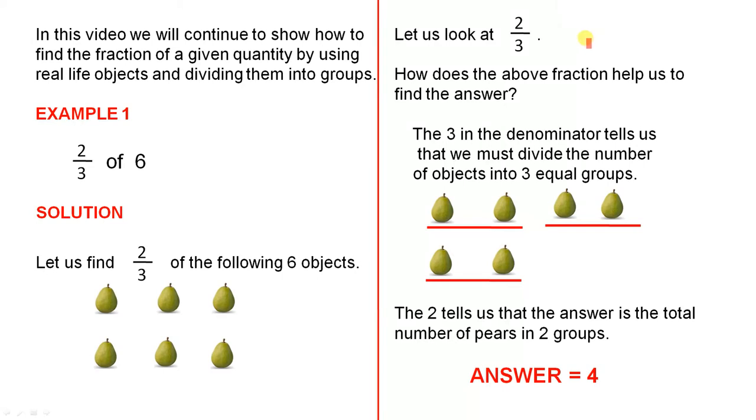So let us look at 2 thirds. How does the above fraction help us to find the answer? With regard to the denominator, it's exactly the same as the previous videos. The 3 in the denominator tells us that we must divide the number of objects into 3 equal groups. So there's 1 group, 2 groups, 3 groups. They're all equal.